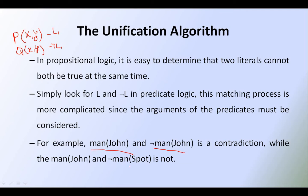But see this example: 'man of John' and 'negation man of spot' — these two literals cannot find the contradiction because John and spot are not the same; this argument is different from the first argument. Whenever the arguments are the same and the name of the literals is the same, then only the two literals can get cancelled and we can find the contradiction. Here, 'man of John' and 'negation man of spot' — contradiction is not found.